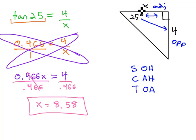In other words, that missing side of the triangle, the adjacent side, is 8.58 units long. We found it by identifying the sides that we're working with and which trig ratio we could use to find that.